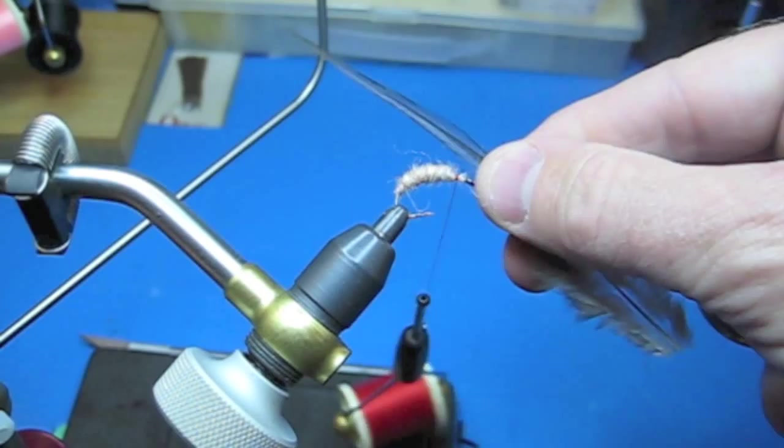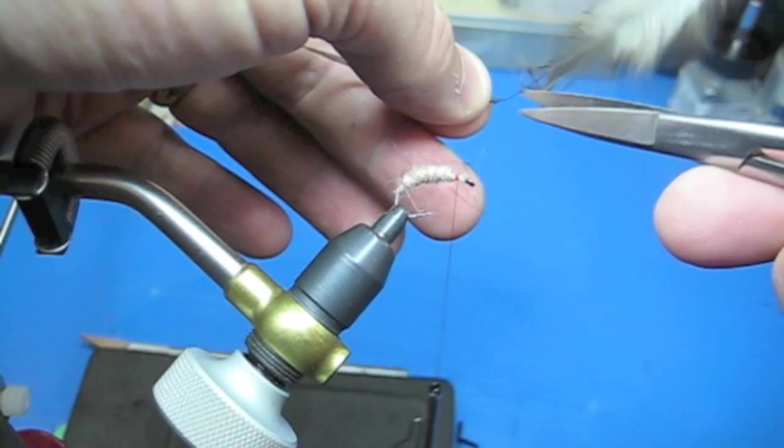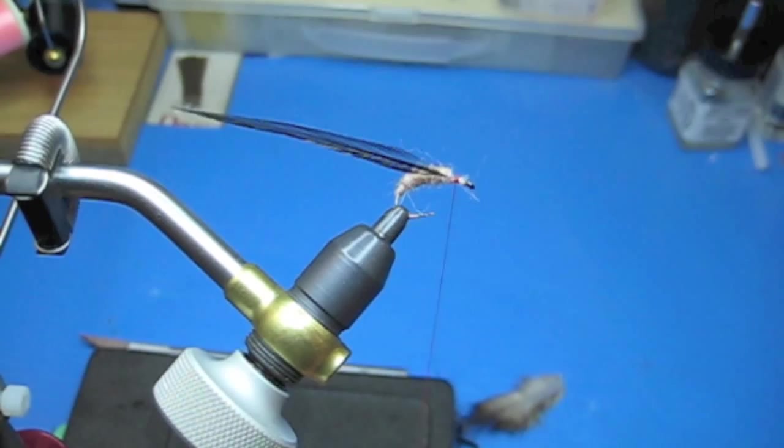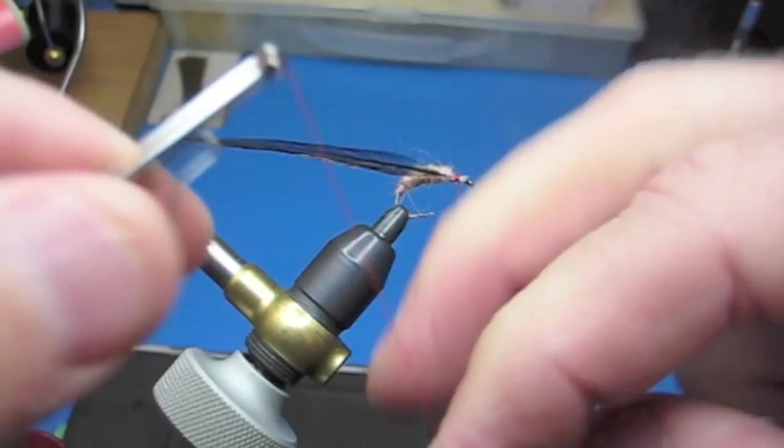For this fly, for the hackle, I use a standard black hackle. Strip it back. Again, I tie it so that the dull part is backwards. Tie it in. Throw a half hitch in or two to anchor your thread for the rotary tool.